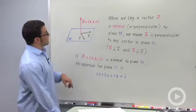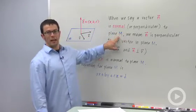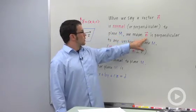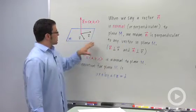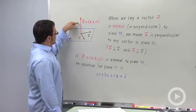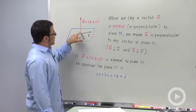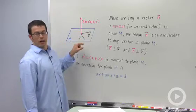And let me define that. When we say a vector n is normal or perpendicular to plane m, we mean that n is perpendicular to any vector in plane m. So if you look at the picture, I've drawn two vectors, v and u, and this vector n, if it's normal to plane m, it'll be perpendicular to each of these two guys.